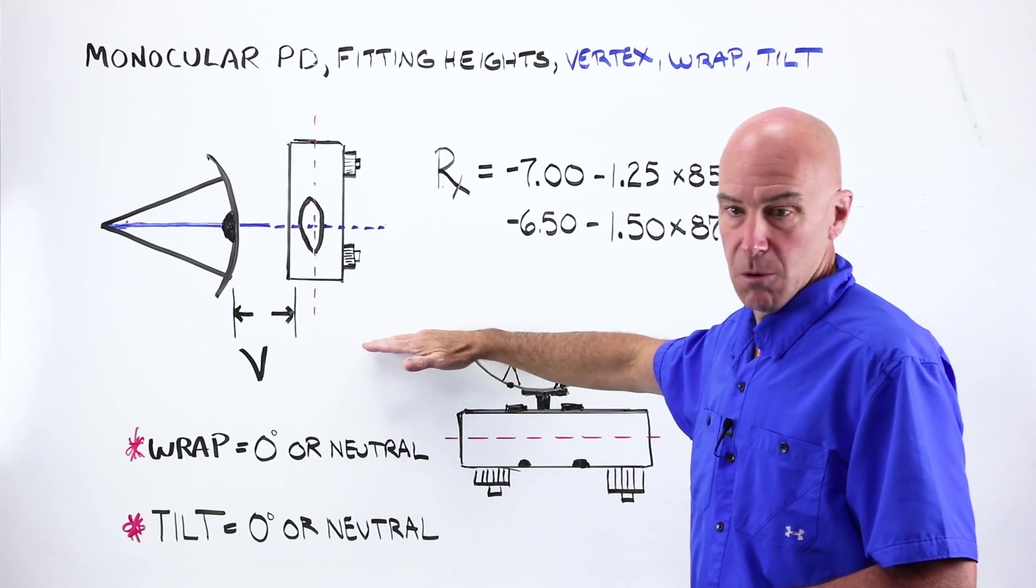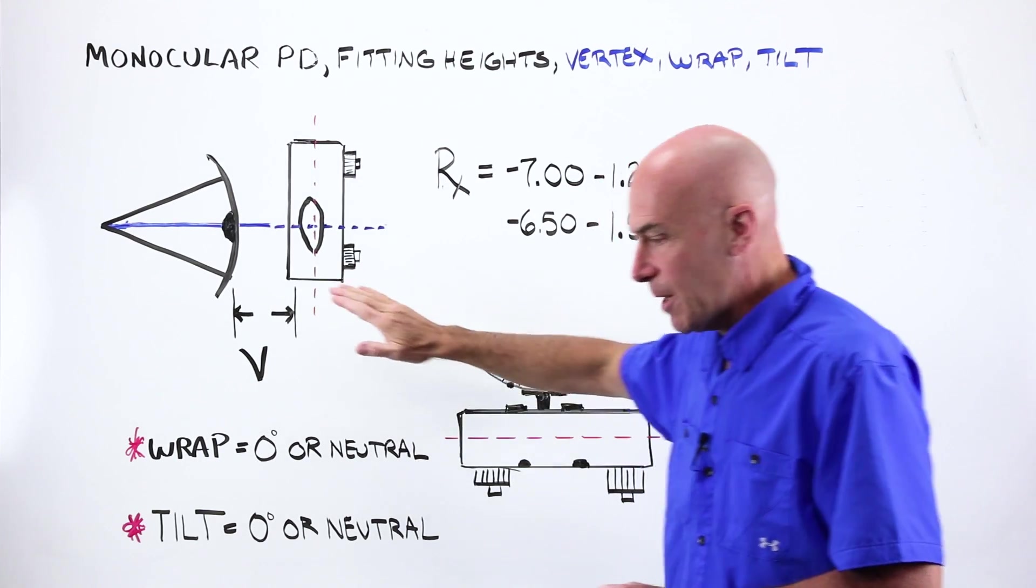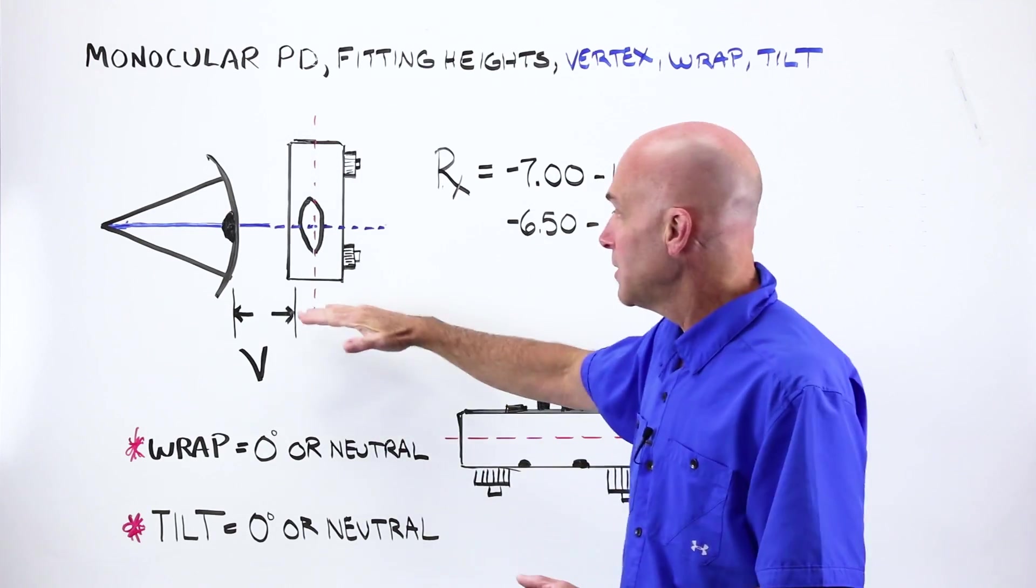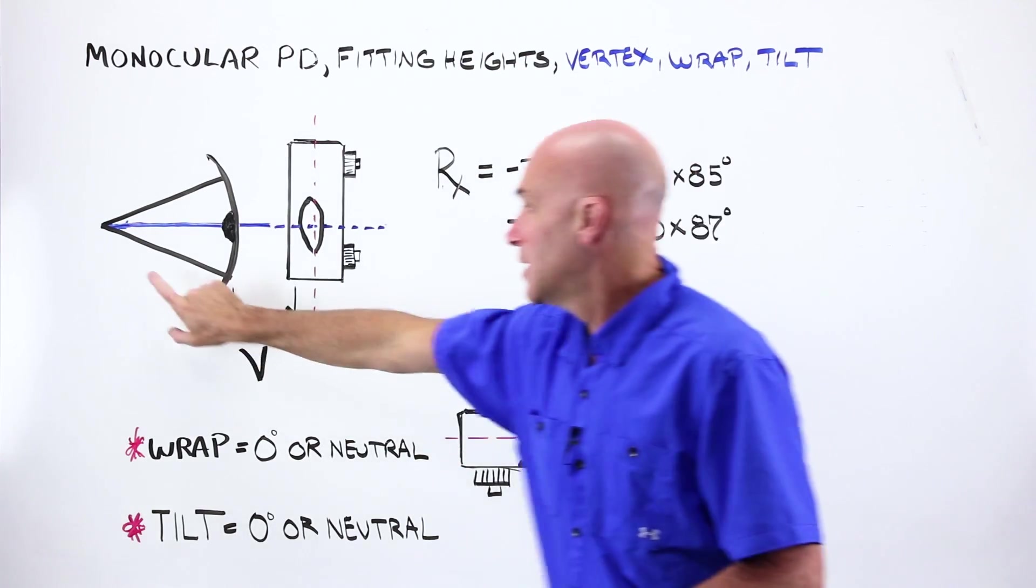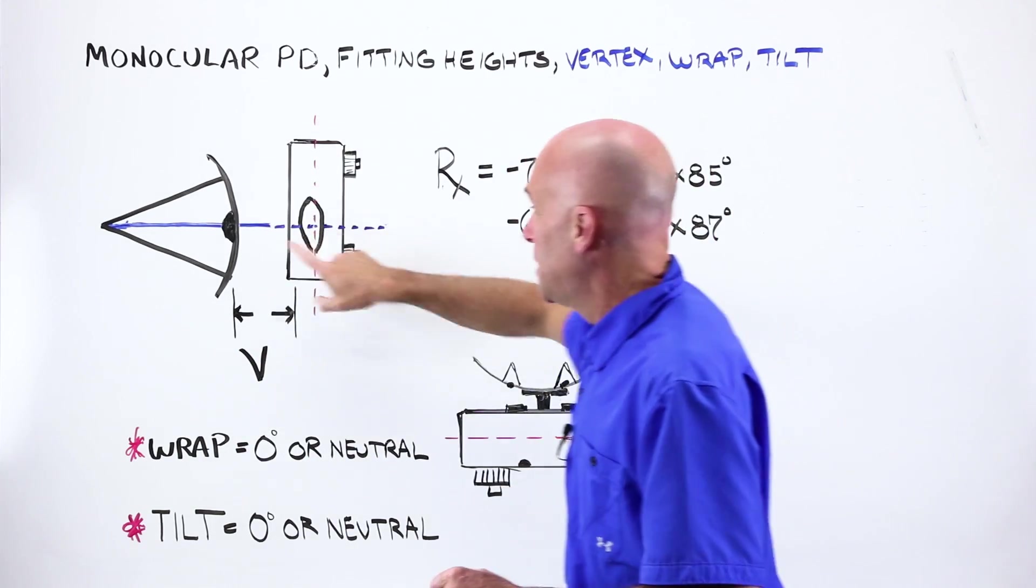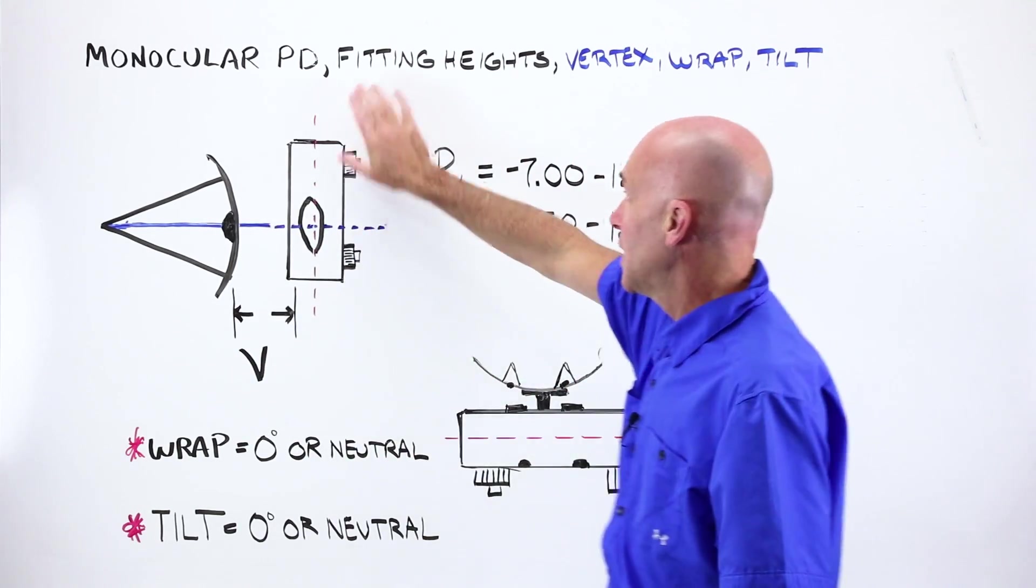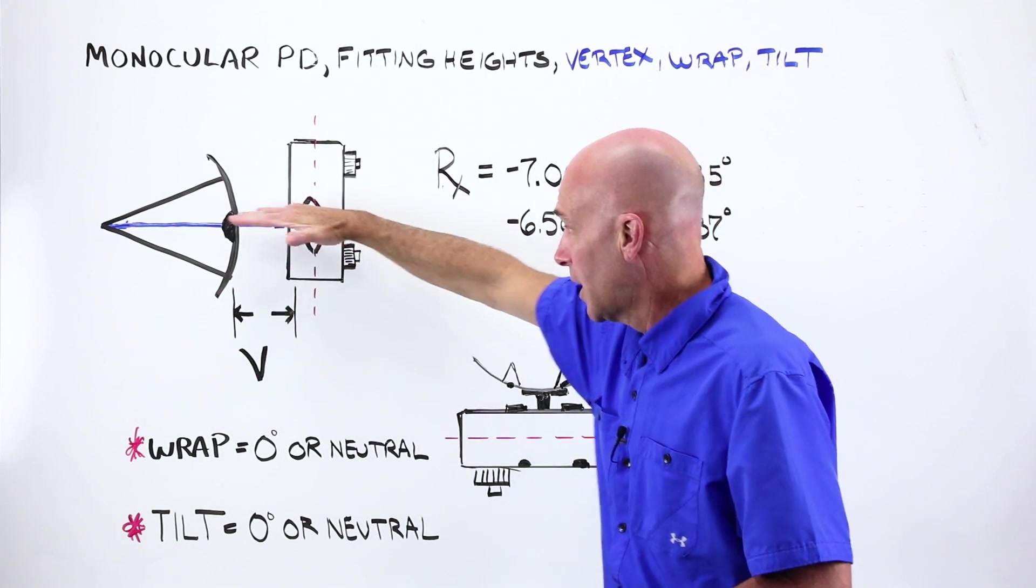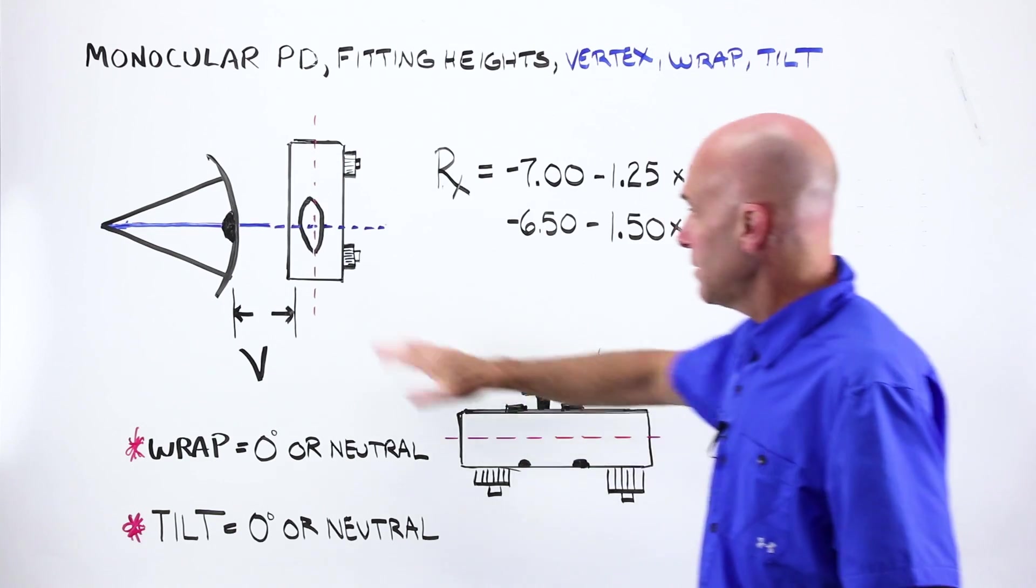This is repeatable. A different doctor, a different phoropter is going to get something extremely close to the prescription that lets the person see clearly. PDs can be adjusted for. It can be moved this way. Fitting height doesn't play into this because it's lining up perfectly in front of their eye.